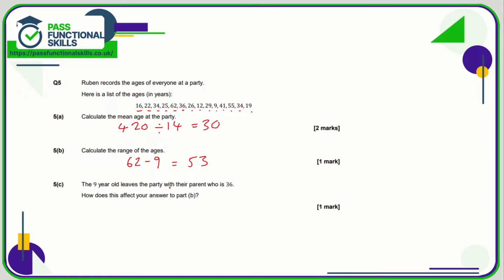In 5c, the 9-year-old leaves the party with their parent who is 36. How does this affect the range? It's not going to affect the oldest person — they're still 62 — but the youngest person is no longer 9; they're now 12. So 62 minus 12 is 50, and we can see the range has dropped in value.